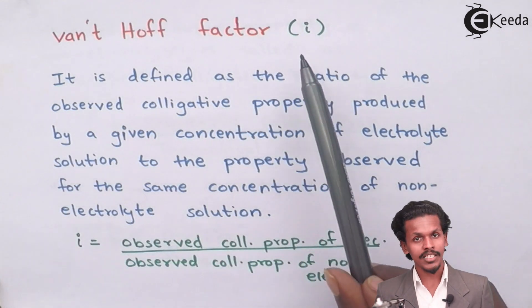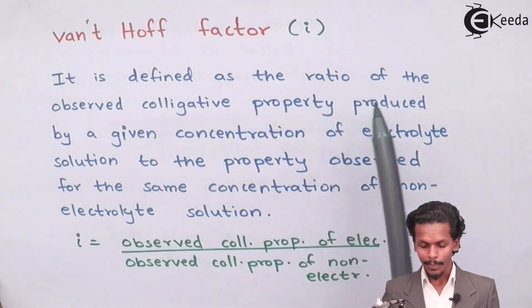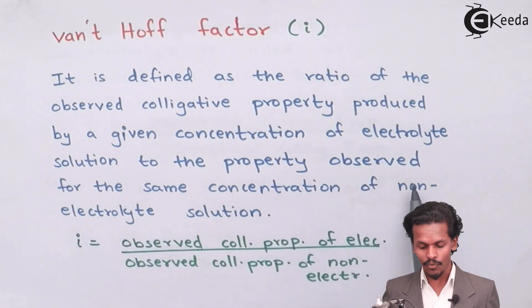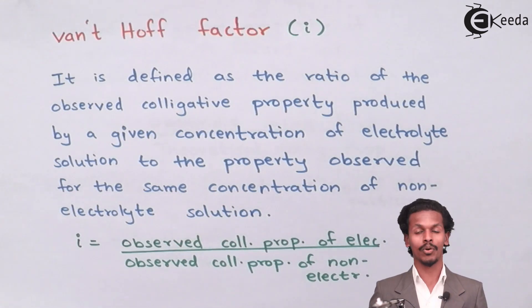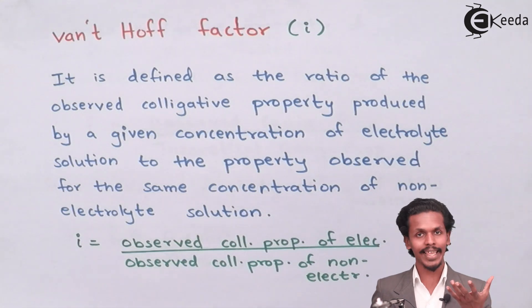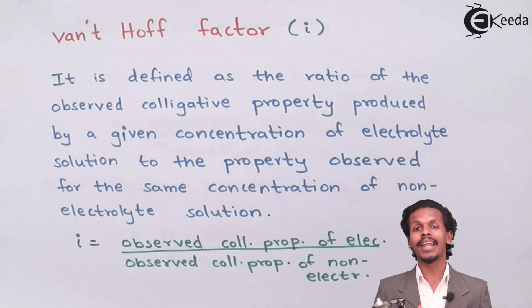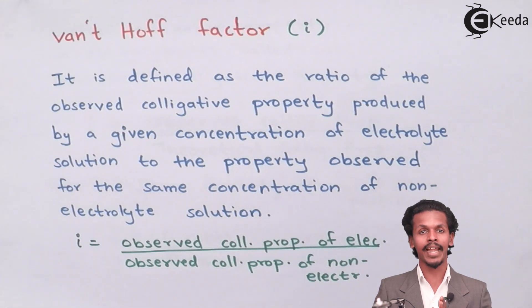The Van't Hoff factor, denoted by small i, is defined as the ratio of the observed colligative property produced by a given concentration of electrolyte solution to the property observed for the same concentration for a non-electrolyte. Two substances are compared: electrolyte and non-electrolyte. Electrolytes usually undergo association or dissociation when dissolved in solution, while non-electrolytes are not affected by association or dissociation.